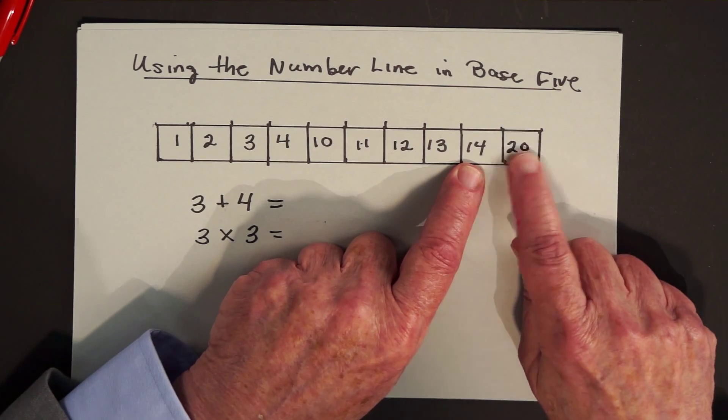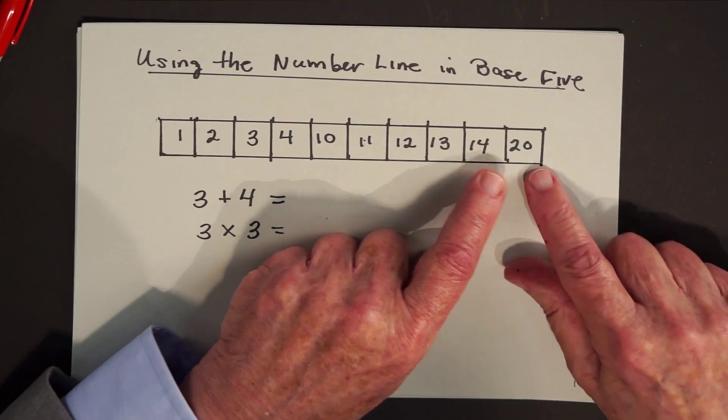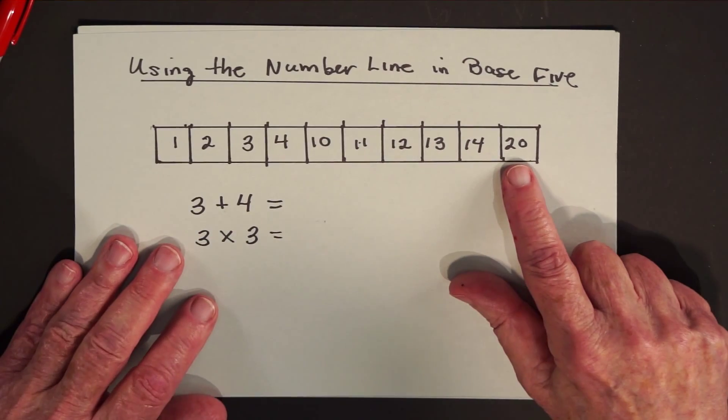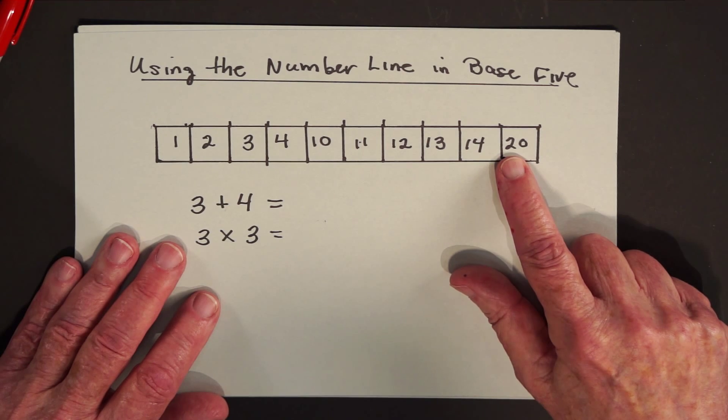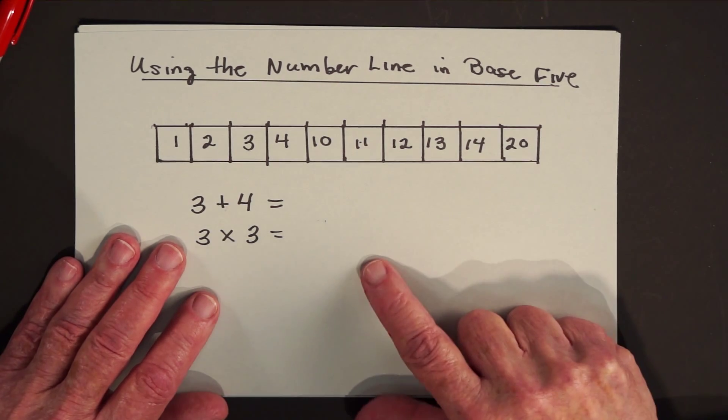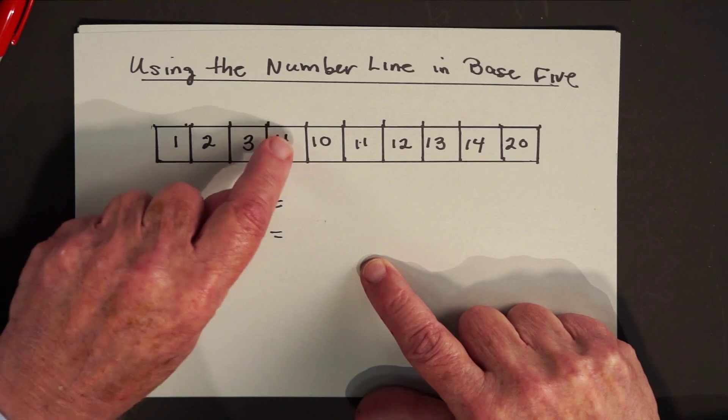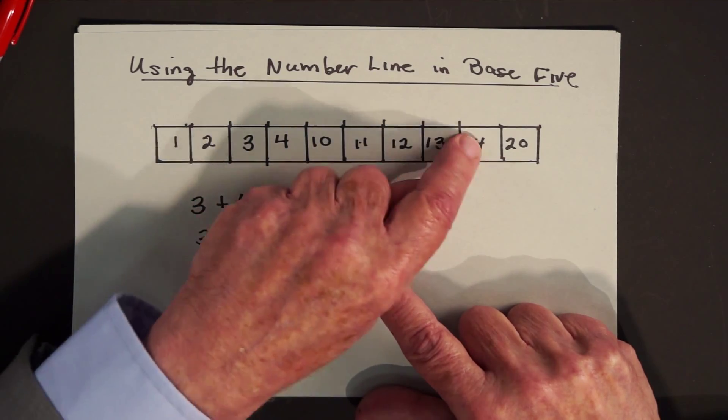After the four comes the zero. This moves up by one. And by the way, you can check this. What would two zero mean in base five? It means you have no ones and two fives. That should be 10. One, two, three, four, five, six, seven, eight, nine, ten.